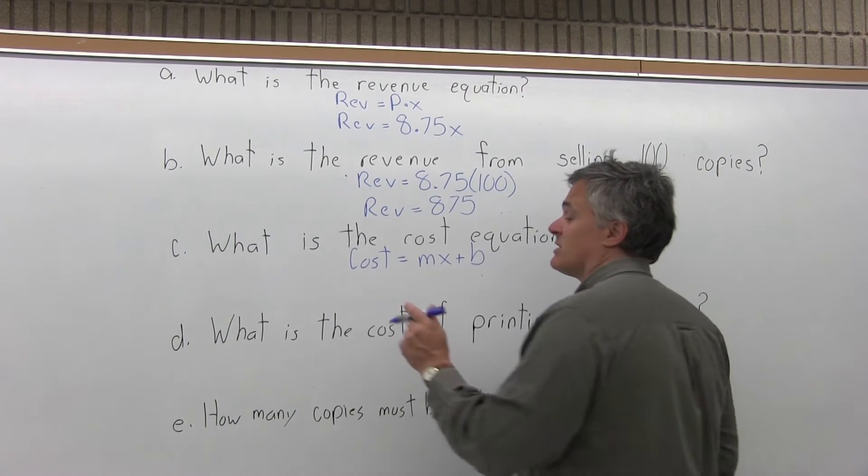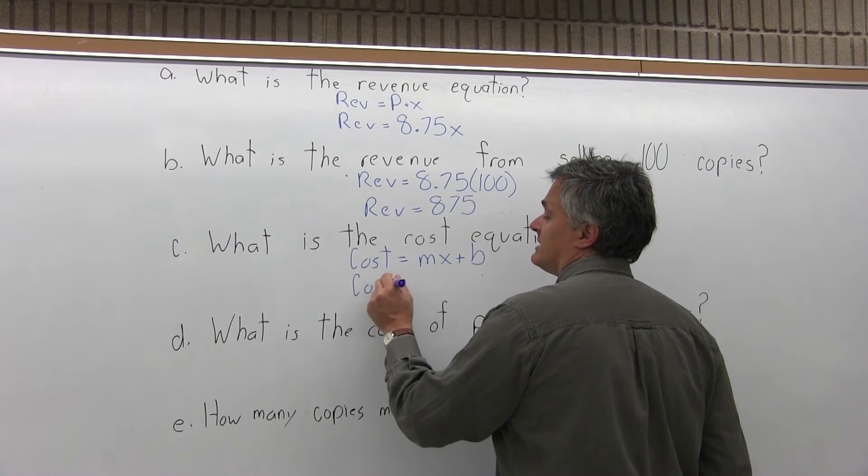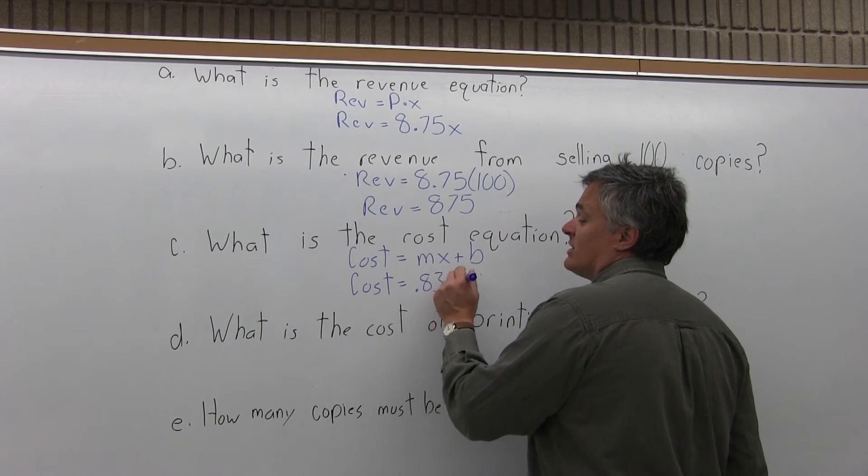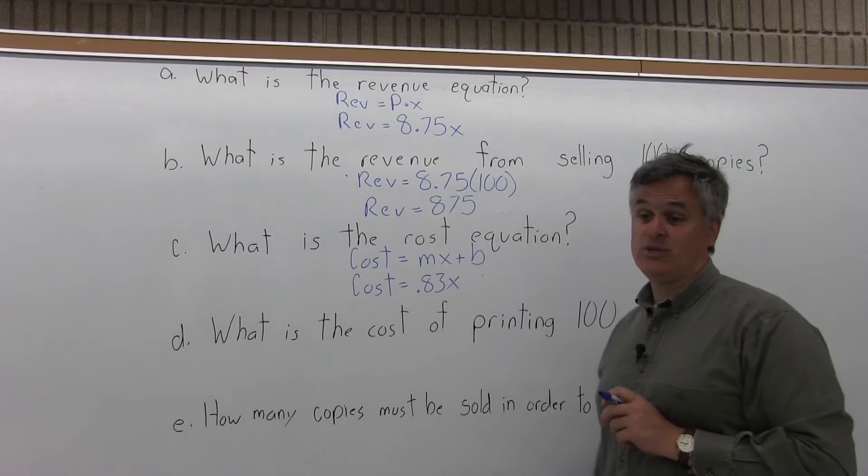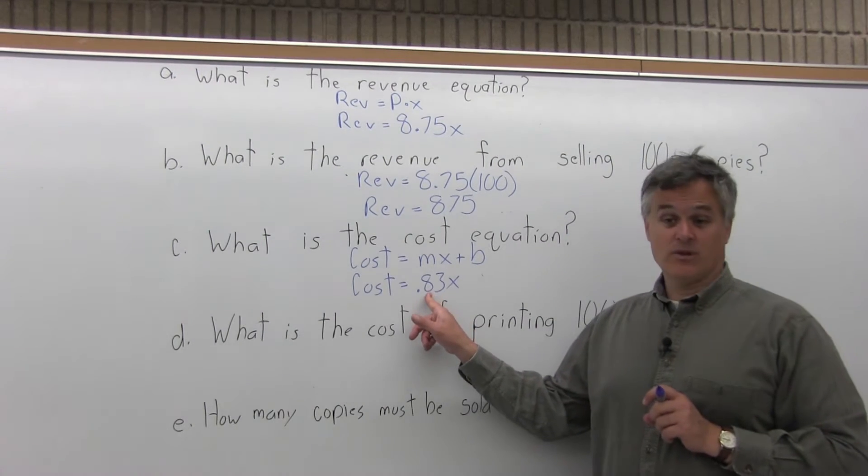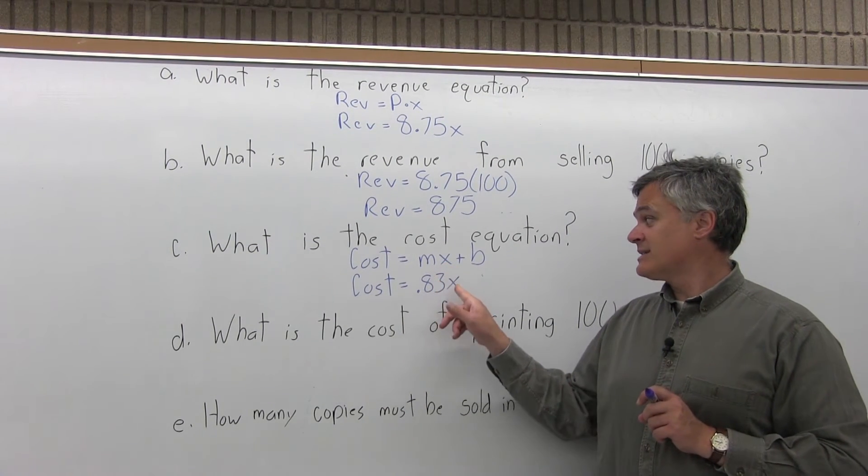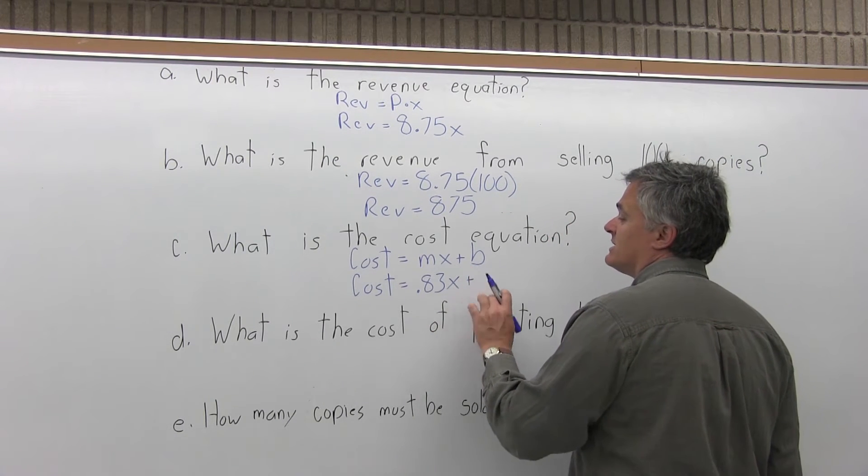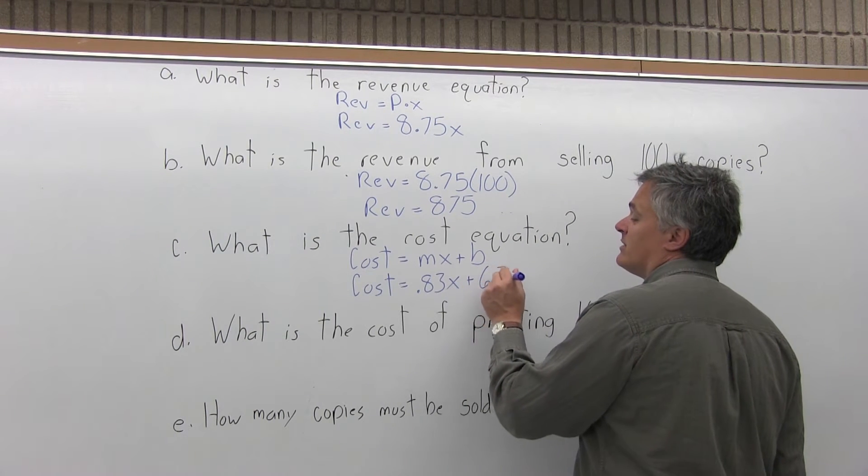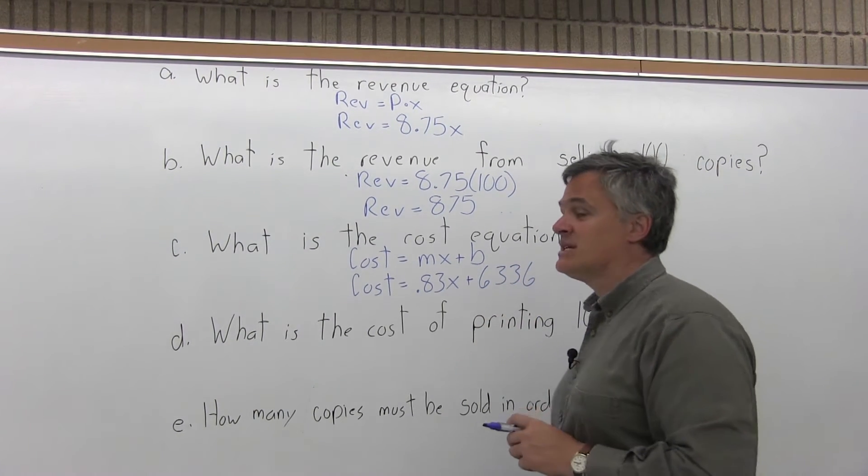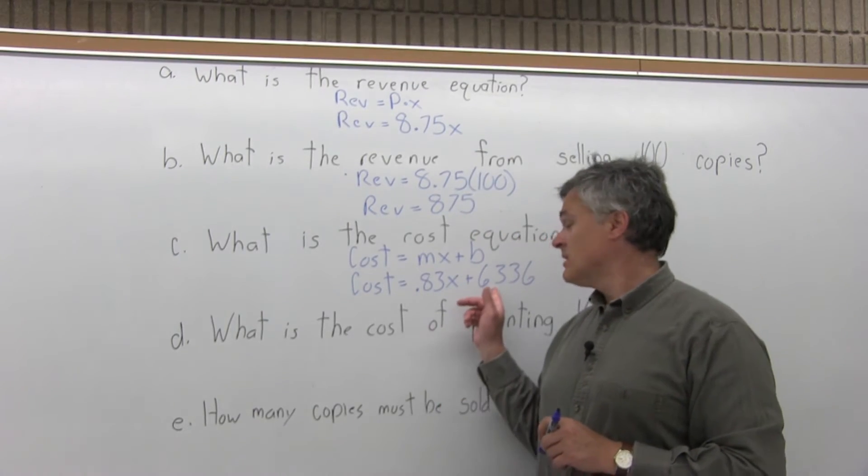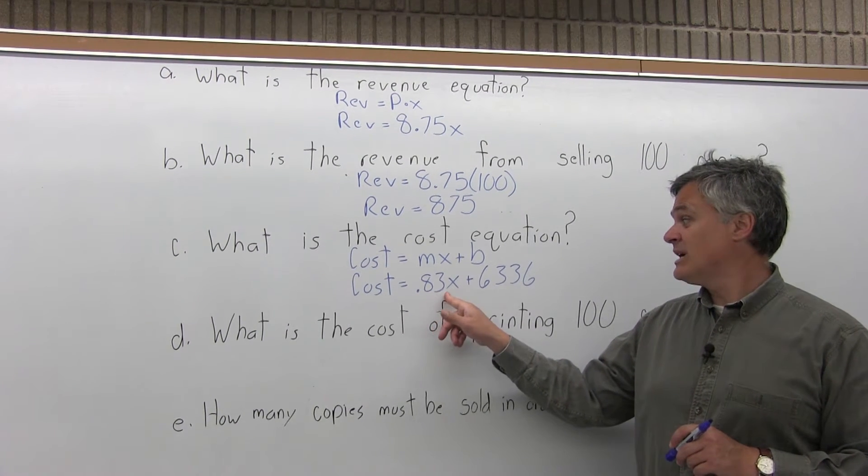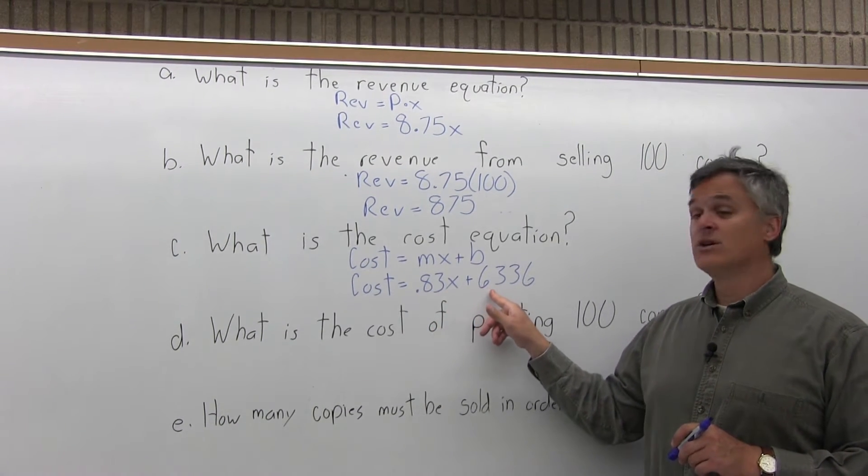For this particular problem, the cost equals M, the marginal cost or cost per item. The question said that it costs $0.83 to print each copy, so that makes .83 the marginal cost. X represents the number of copies you're going to make. The fixed cost is $6,336 as given in the information. So the cost equation is cost equals .83X plus 6,336.